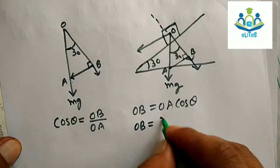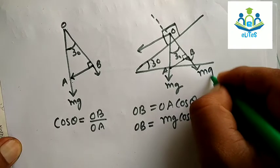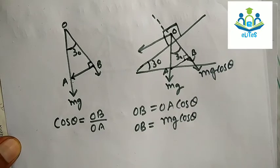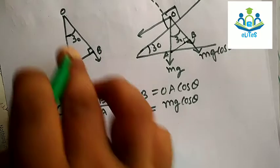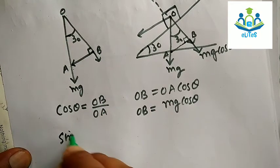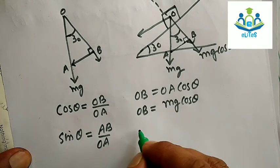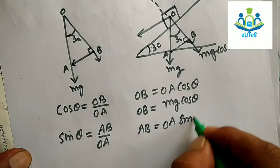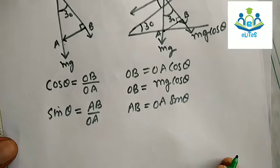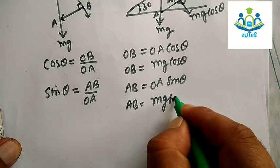So this component OB equals OA cos theta, which is Mg cos theta. For the sin theta component in the same right triangle: sin theta equals perpendicular AB over hypotenuse OA, so AB equals OA sin theta, which is Mg sin theta.